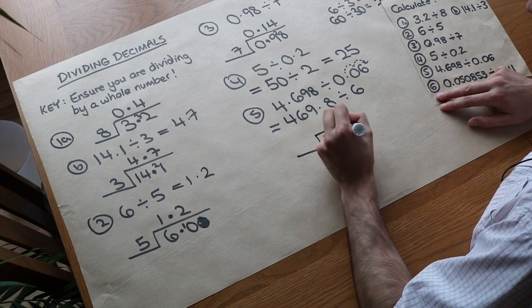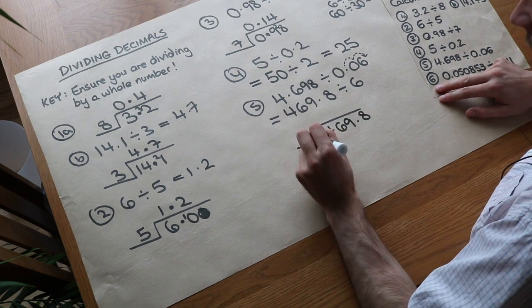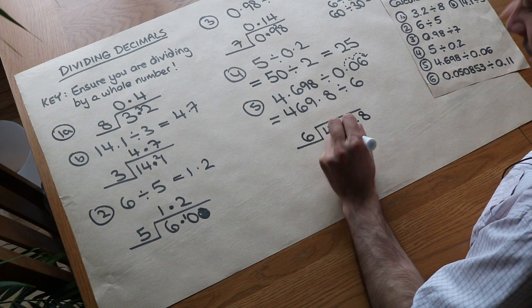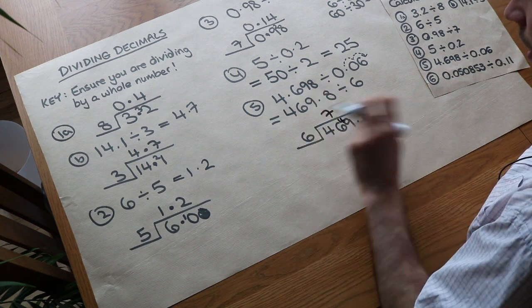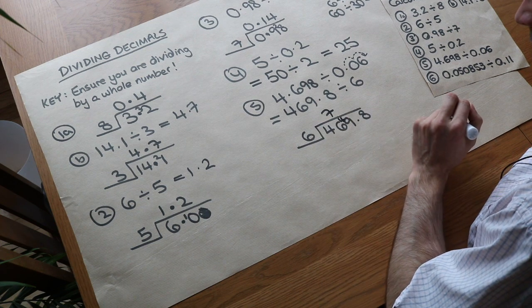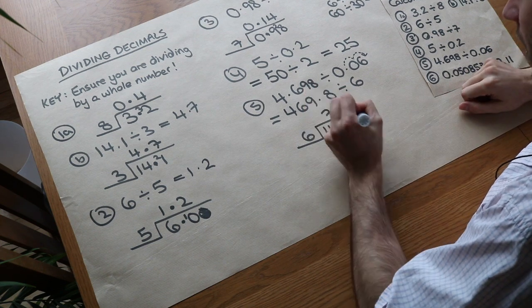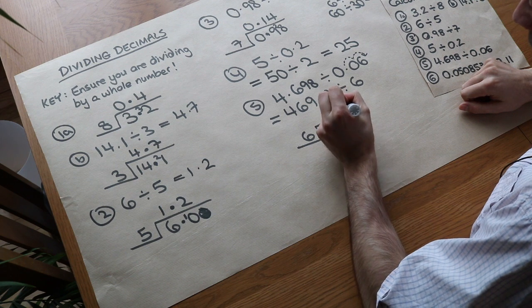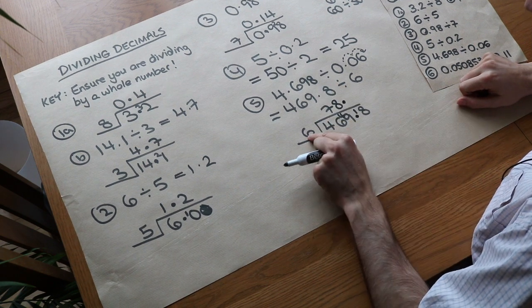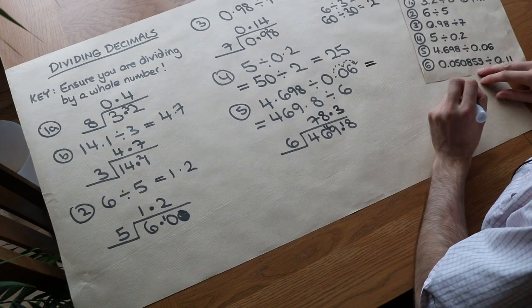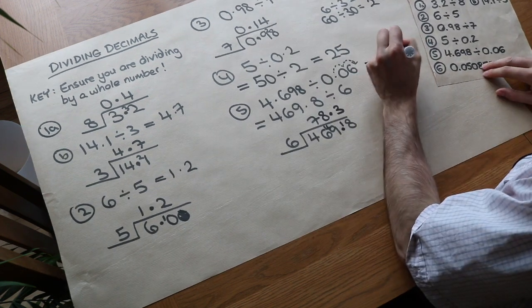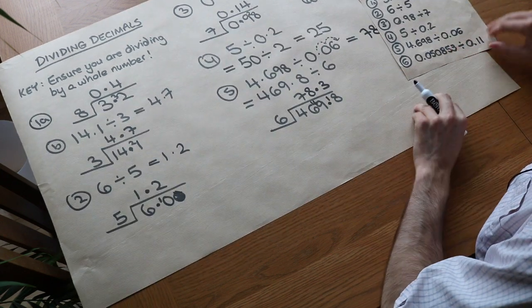So 469.8 divided by 6. 6 into 4, you can't do, but 6 into 46, it goes in 7 times remainder 4. 6 is into 49, it goes in 8 times remainder 1. Make sure you put the decimal point up here as well. And then 6 into 18, it goes 3 whole times. So the final answer to this was 78.3. And no further adjustment is needed.